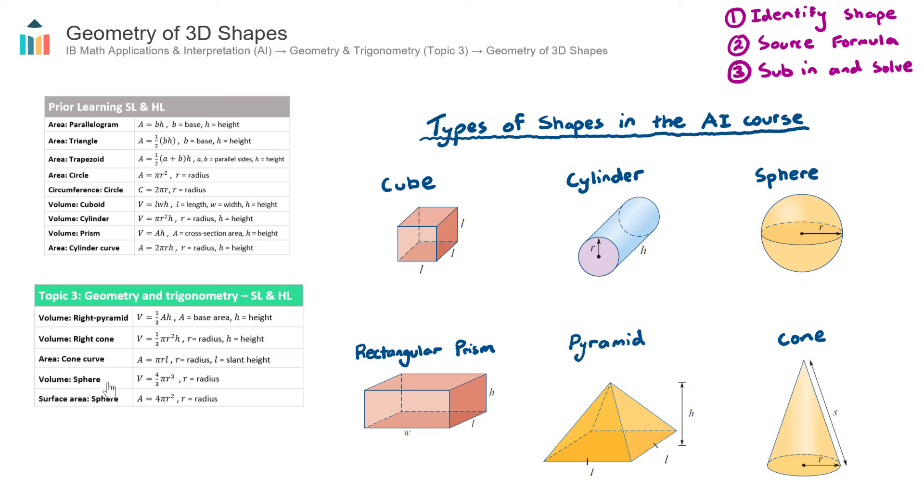So for example, let's say the volume of a sphere, you have identified it as a sphere, you need to then go and either find the radius, or perhaps the radius is given to you, and then substitute that radius into the formula.